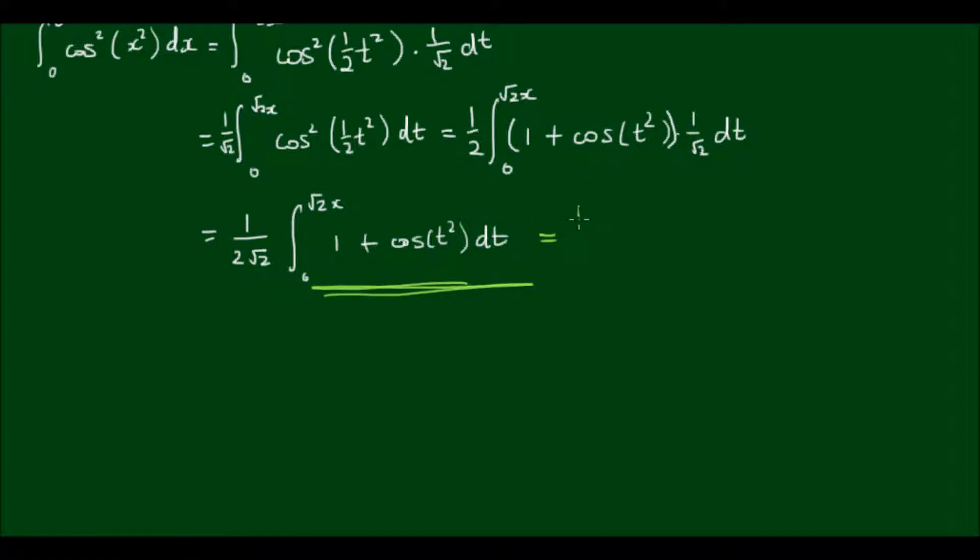So it's 1 on 2 root 2 times the integral of 0 to root 2x of dt plus the integral from 0 to root 2x of cos t² dt.